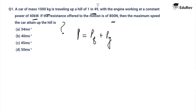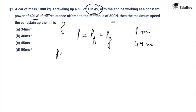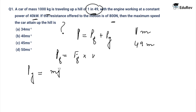Let's understand the meaning of 1 in 49. Basically, this means that the height of the slope is 1 meter and the base of the slope is 49 meters. We know that power due to friction is F_friction times V, and power due to gravity is P_G equals MGH upon delta T.